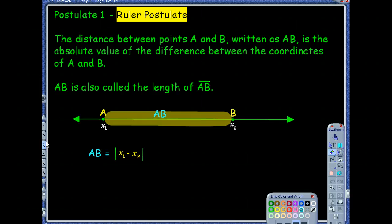So the first postulate that we're going to focus on is what we call the ruler postulate. The ruler postulate says the distance between points A and B written as AB. Now, notice that this isn't a segment. This is a distance.